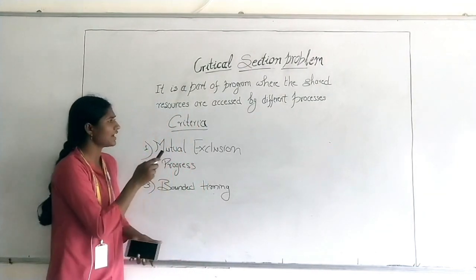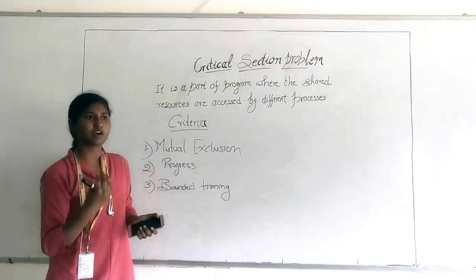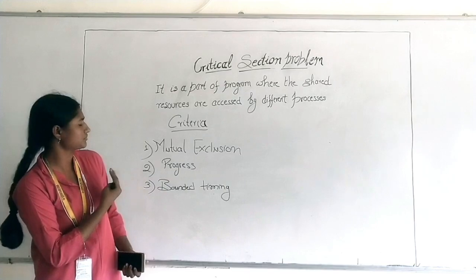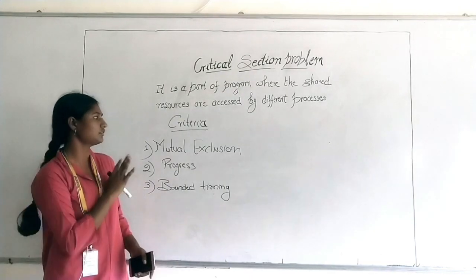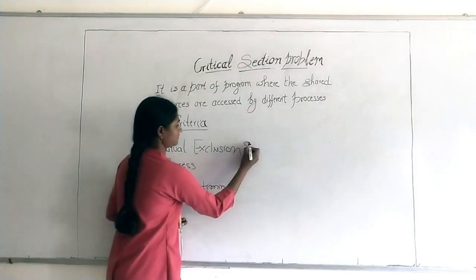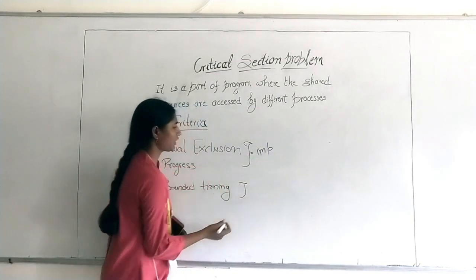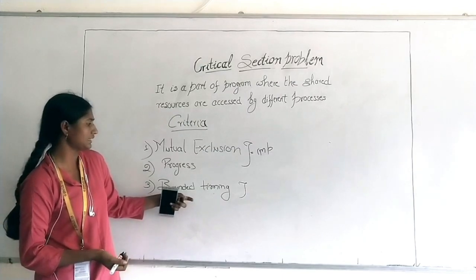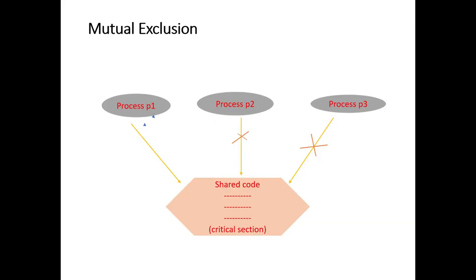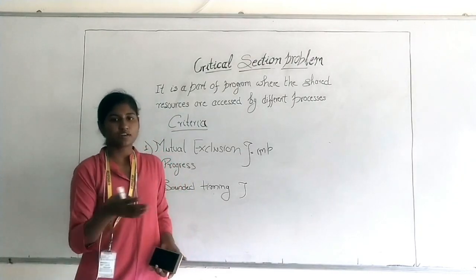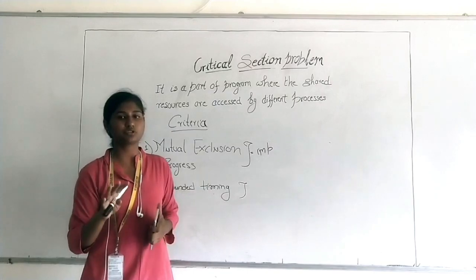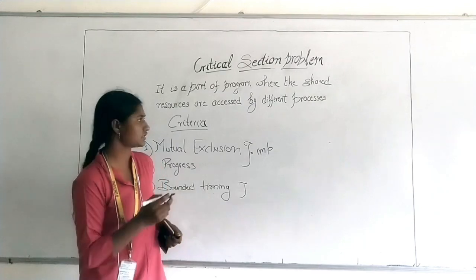To address the critical section problem, we have to follow some criteria to keep in mind before giving any solution. There are three main criteria to solve the critical section problem. The first is mutual exclusion — if many processes are given, every time only one process comes into the critical section, uses the resource, and gets out. This means one at a time; every process comes one at a time, not more than one.